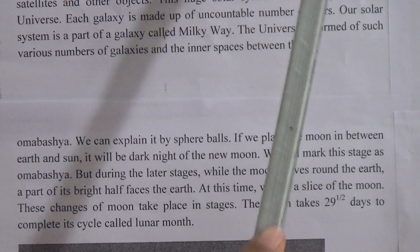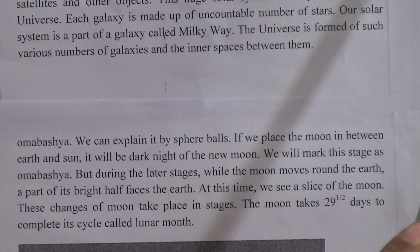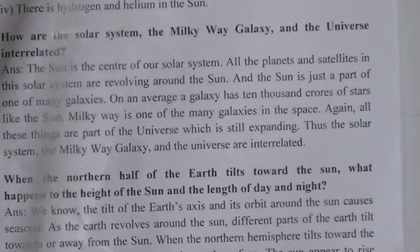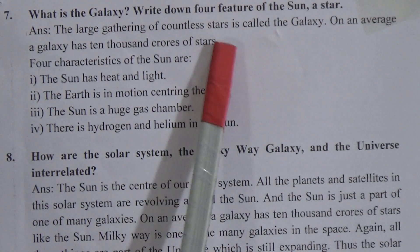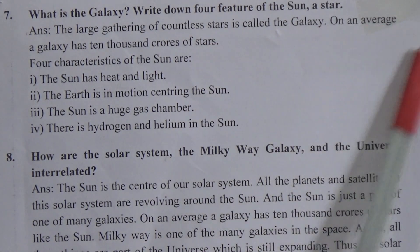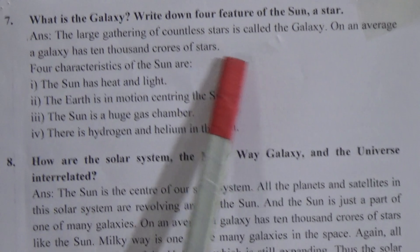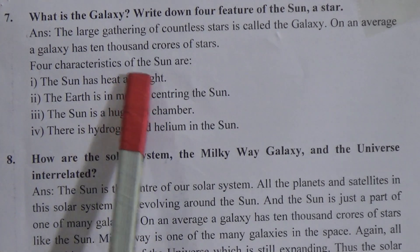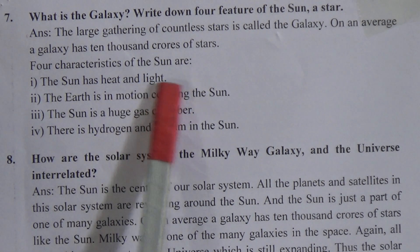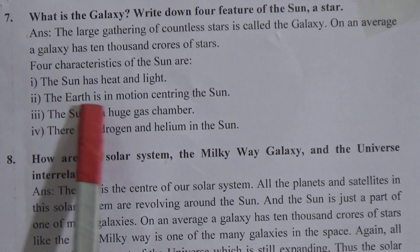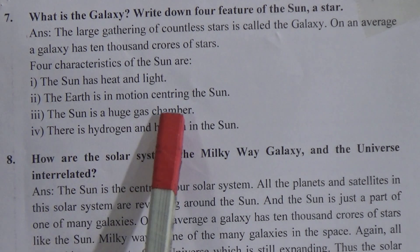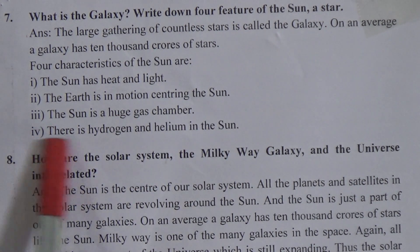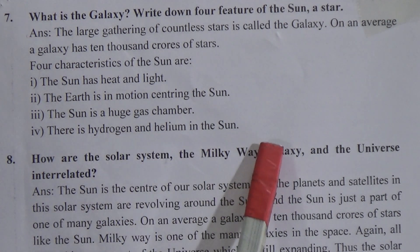Come to question number 7: what is a galaxy? Write down four features of the sun. The large gathering of countless stars is called the galaxy. On an average, a galaxy has 10,000 crores of stars. Four characteristics of the sun are: first, the sun has heat and light; second, the earth is in motion centered on the sun; third, the sun is a huge gas chamber; and fourth, there is hydrogen and helium in the sun.